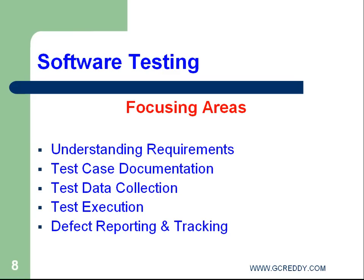Test execution — important areas are sanity testing, comprehensive testing, and re-testing and regression testing. Next, defect reporting and tracking. These are the learning objectives for a software tester.